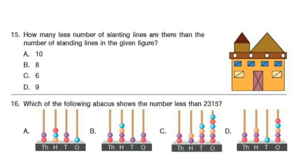Question 15. How many fewer slanting lines are there than standing lines in the given figure? You can pause the video and count the slanting and standing lines and find their difference. The correct answer is option B: 8.